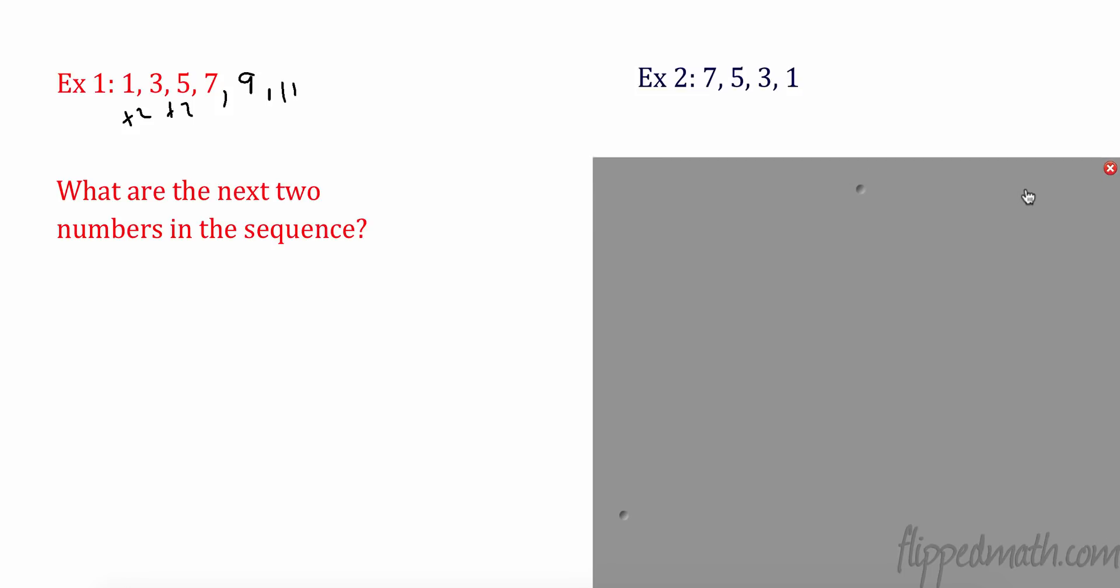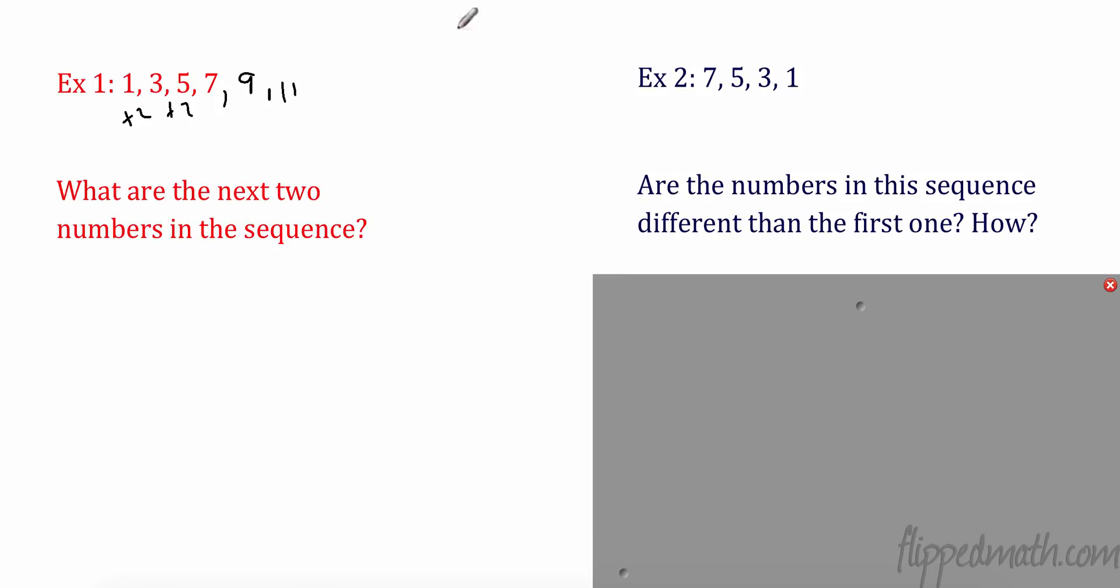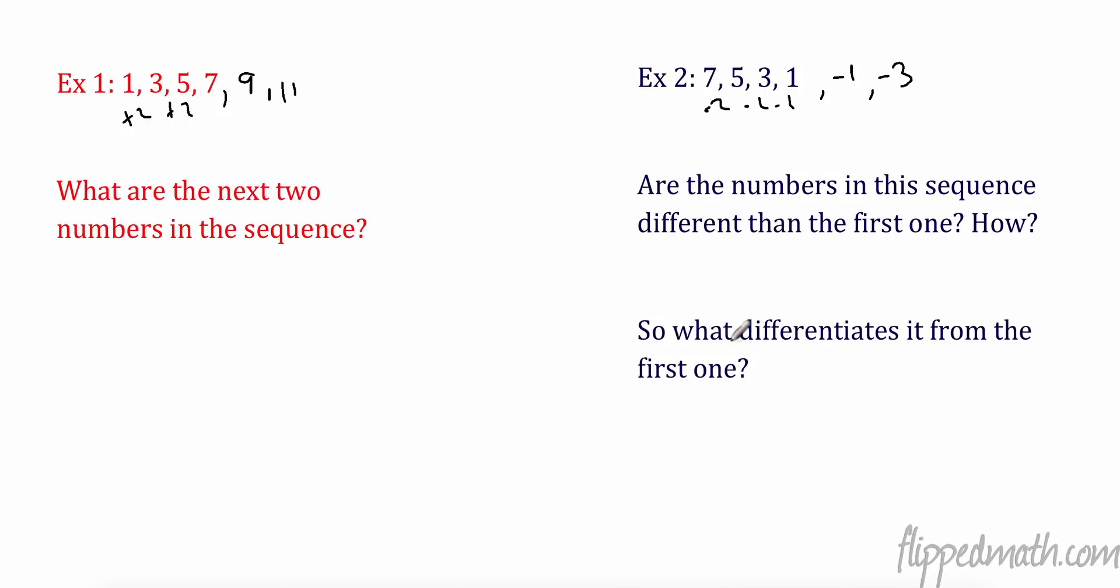Let's try example number two here. Example number two: 7, 5, 3, 1. Well, those are the exact same numbers. They're the exact same numbers we have. So what are the next two numbers here? Well, they're not exactly the same. The next numbers, here I'm subtracting two. So in this case, 1 minus 2 is going to be negative 1. Negative 1 minus 2 is going to be negative 3. So there is a difference. The numbers in this sequence are different. How are they different? The numbers exactly are the same, but the difference is the order of the sequence. So does it matter what order they go in? Yes, it totally matters.